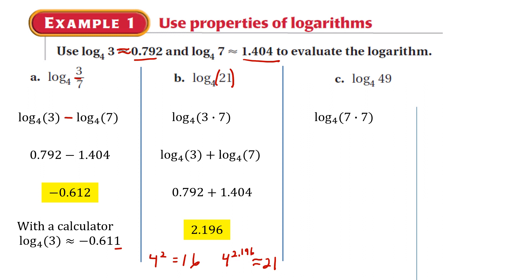And then next, log base 4, 49. So this 49, I could look at as a 7 times 7. And then I just do something similar to what I did in the last step. Gives me 2.808. Or I could look at the 49 as 7 squared. And then I could apply the power property of logs. And then I just have to double 1.4, and I get the same answer. So either way, the answer is approximately 2.808.